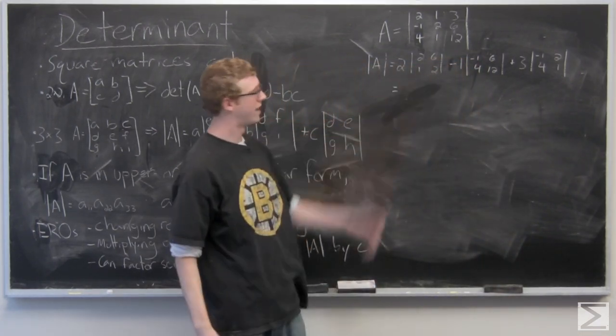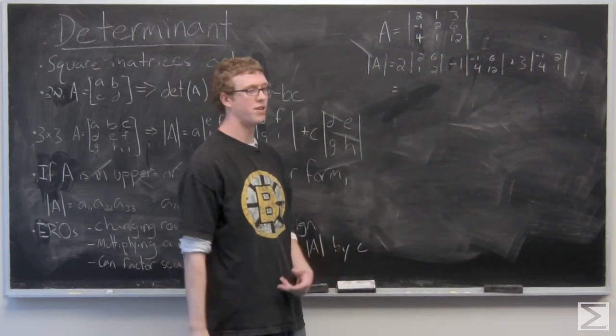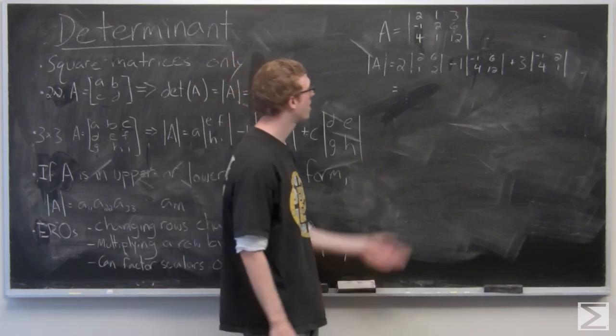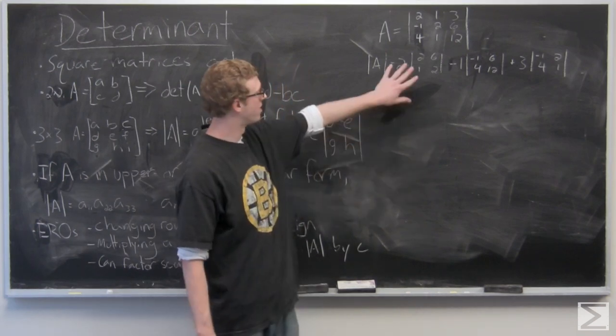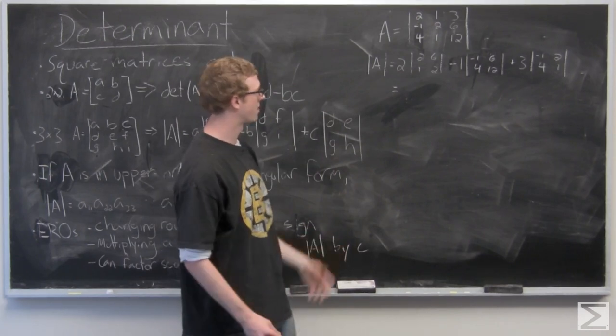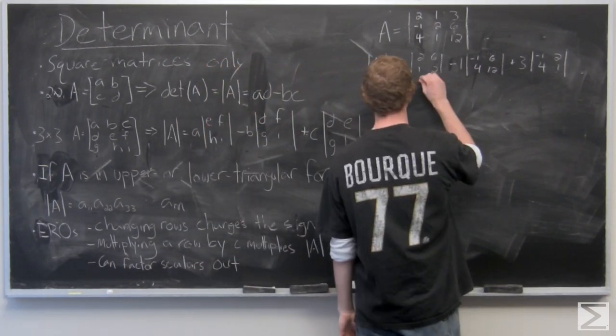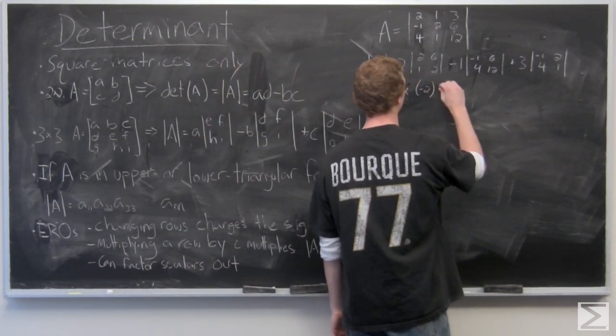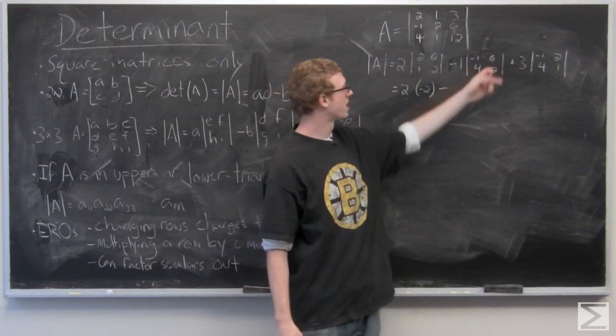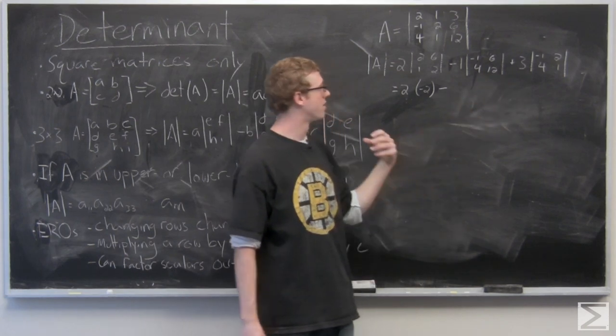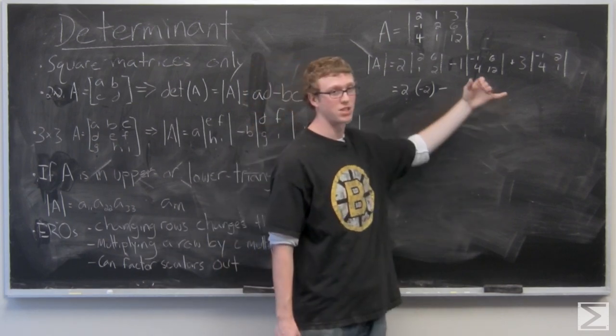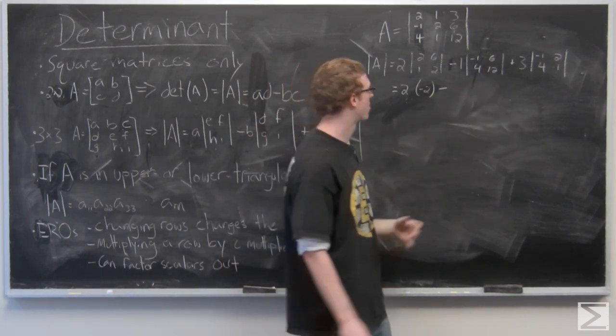So we've broken it down into components that are 2x2 matrices, which are very easy to take the determinant of. So you have two, and then the determinant inside is 2 times 2 minus 6 times 1 is negative 2. And then we have negative 1 times 12 minus 6 times 4 is negative 36.